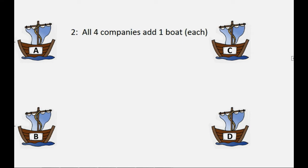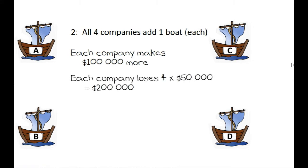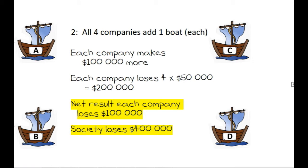Question two: what if all four companies add one boat each? Each company will make $100,000 more because they've got an extra boat catching them fish. However, each company loses $200,000 for the extra effort all the boats they already had need to use — the time and money to catch their fish. The net result for each company is a loss of $100,000, and the net result for society is a loss of $400,000.